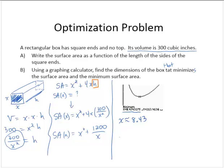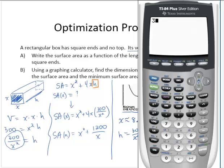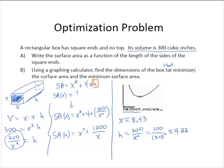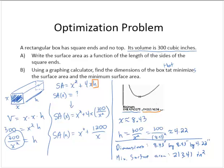Now what about h? Well, h is 300 over x squared. So that would be 300 over 8.43 squared. Let's calculate that. 300 divided by 8.43 squared is 4.22. So the dimensions are 8.43 inches by 8.43 inches by 4.22 inches. And then the minimum surface area is 213.41 square inches. And I got that value from the minimum of the graph.